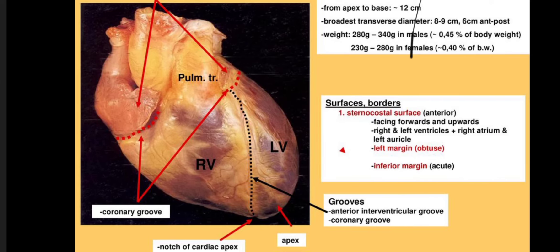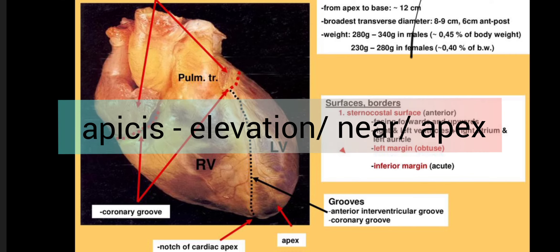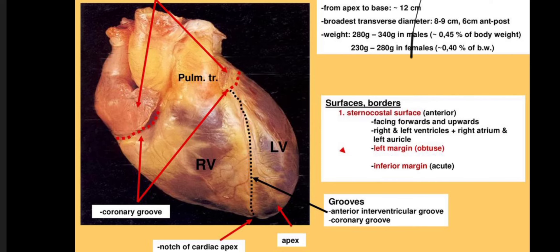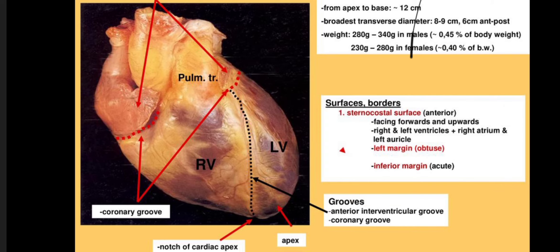Now let's focus on incisura apices cordis. Anatomy becomes much easier when you concentrate on the terms. 'Incisura' means a notch or an indentation on a surface. 'Apices' means apex or an elevated part. 'Cordis' is always related to the heart in Latin — wherever we find 'cordis,' it is always related to the heart.